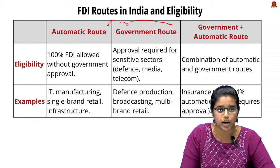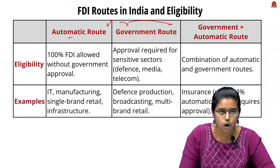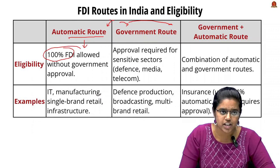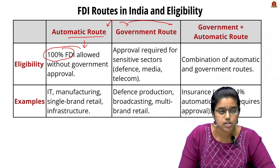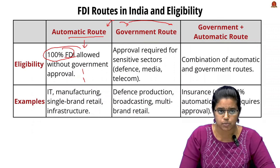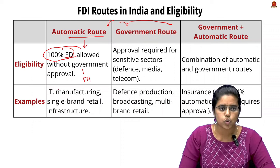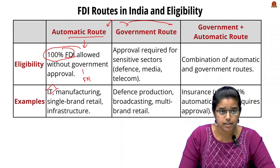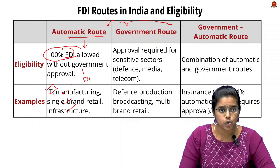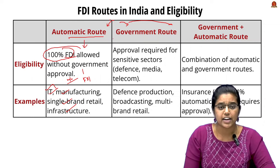The first is the automatic route, where 100% FDI is allowed and does not require government approval to establish the business. Key sectors under the automatic route include IT manufacturing, single-brand retail, and infrastructure.